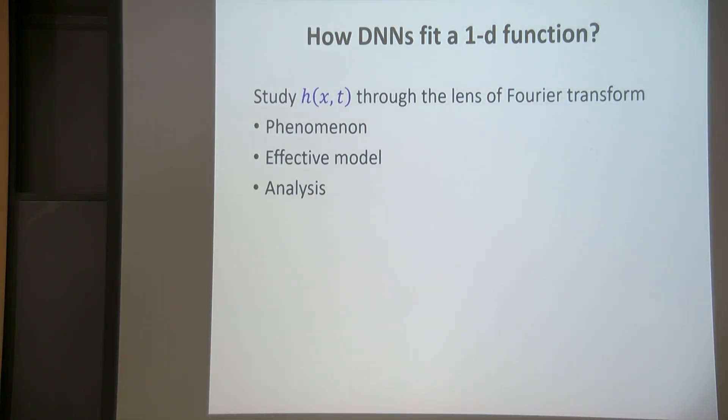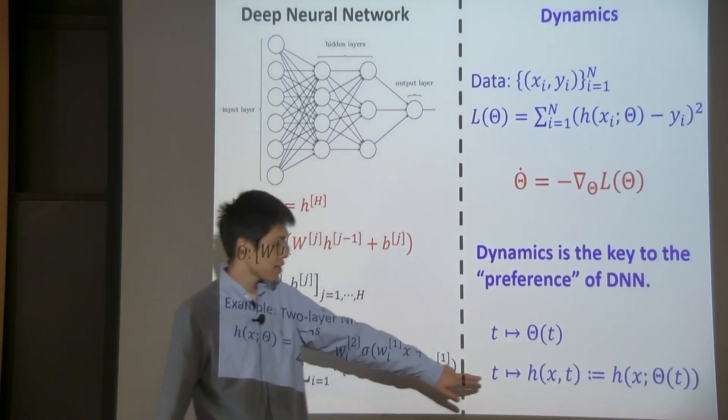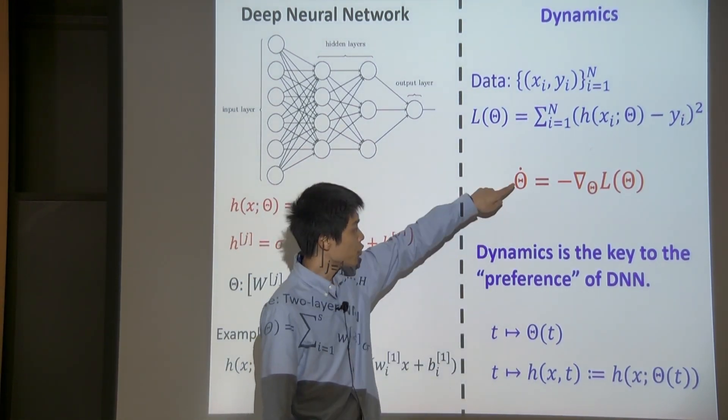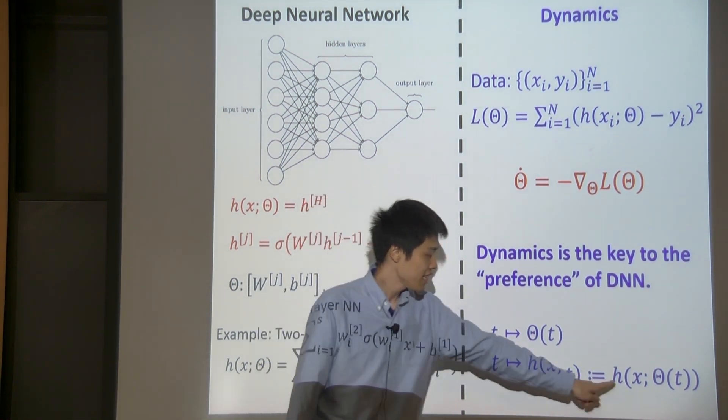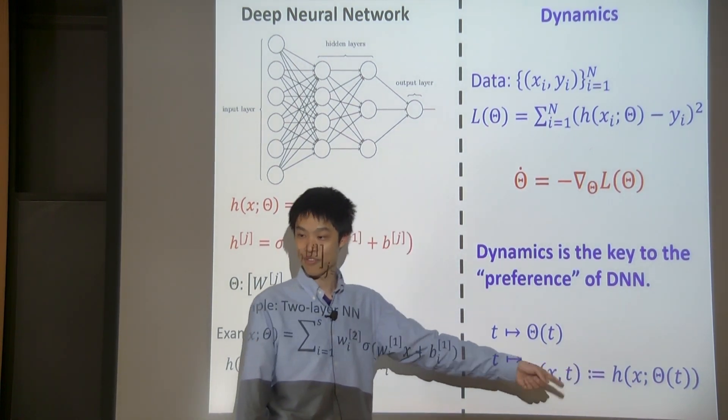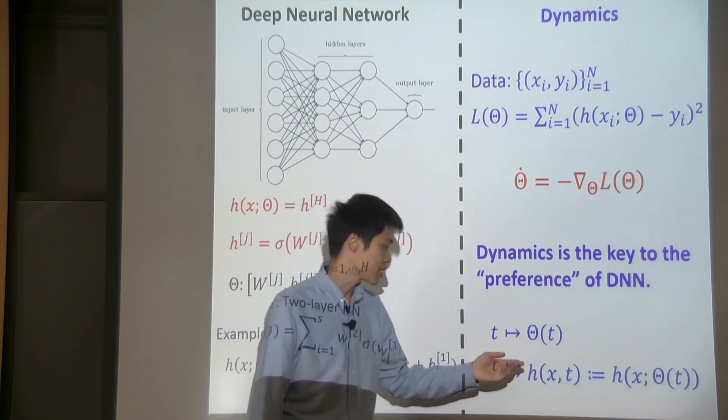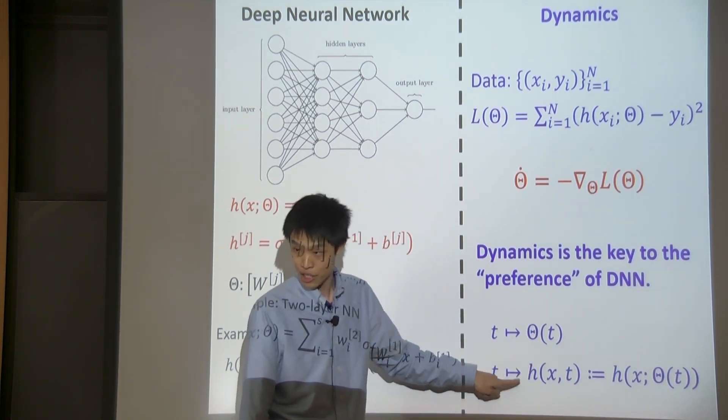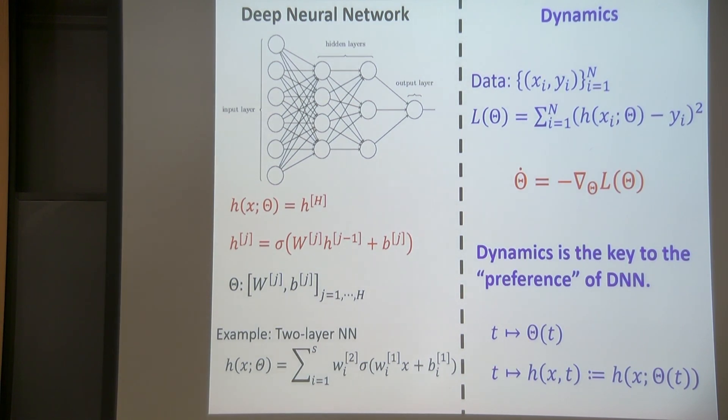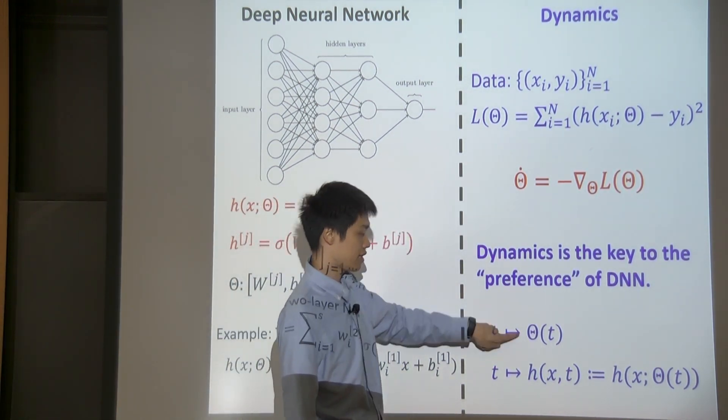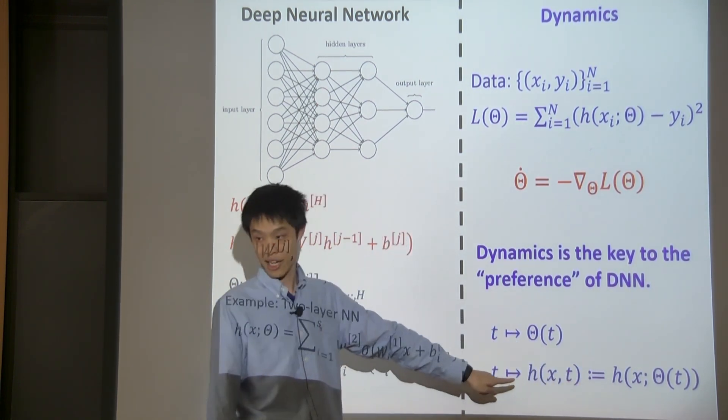So, okay. Later, I will focus on the question of how DNNs fit a 1D function. I will study these trajectories of h(x,t) through the lens of Fourier transform. I will tell you the phenomenons we found, an effective model, and some analysis related. What is the t here? Is the t just part of the dynamics for theta? Yeah. So essentially you run this dynamics, which is in the theta space, and you put this theta inside this deep neural network because it's a parameter of the deep neural network. And then you get this one. I just tried to remove this theta. But essentially, because of the evolution of this theta, you get an evolution of h. First you evolve this, you get a theta t. And then you put this theta t in this model, you get h(x,t).